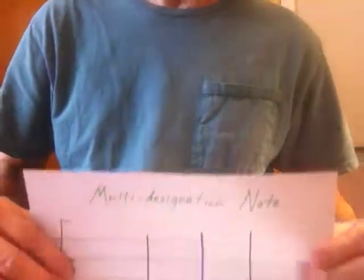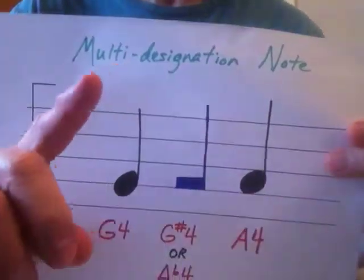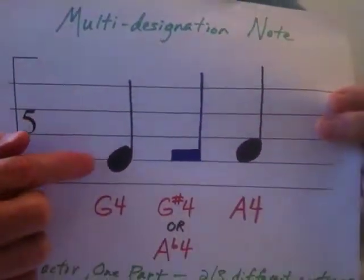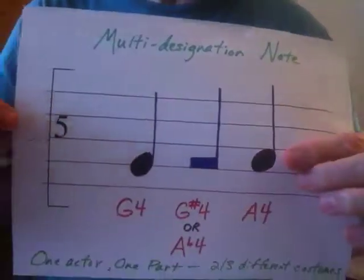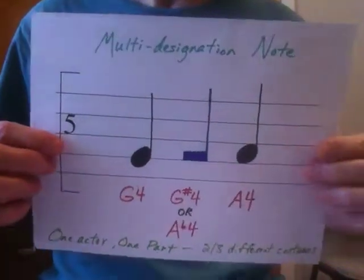Let me show you my note symbol. I worked years on this and didn't talk about it for a long time because I was kind of embarrassed. Here it is — I call it the multi-designation note. I just showed you a G sharp earlier; here's a G4 and here's an A4. Remember, this clef is mine — it's the same as the old G clef, I always use my clef.